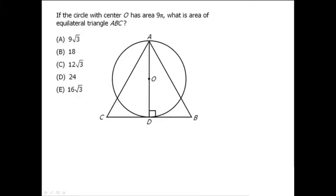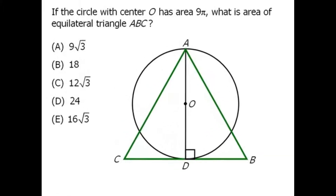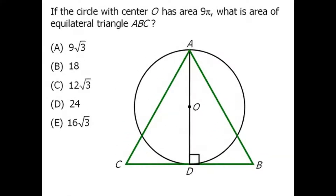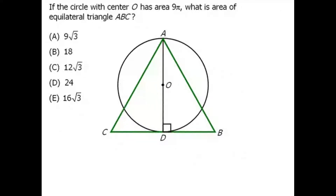Our goal is to find the area of this equilateral triangle. The area of any equilateral triangle is equal to root 3 over 4 times the length of one side squared. So our goal here really is to find the length of one side of this equilateral triangle. Let's label one side to be k, so our goal is to find the value of k.